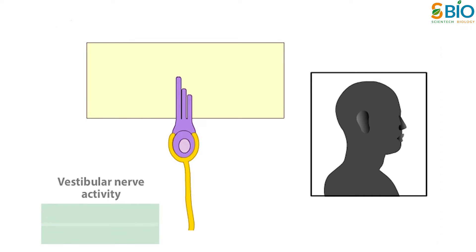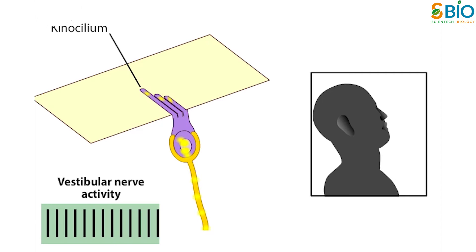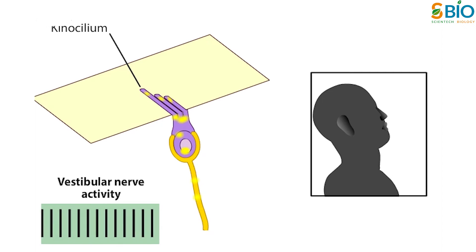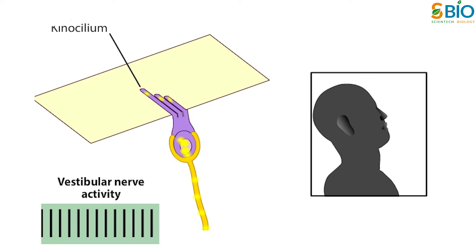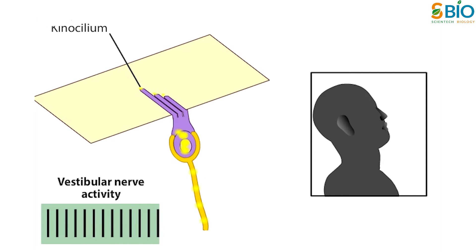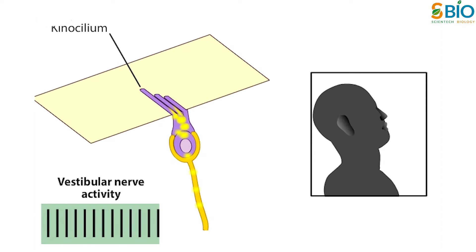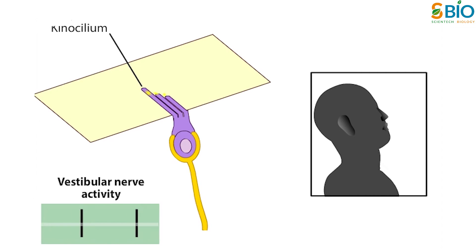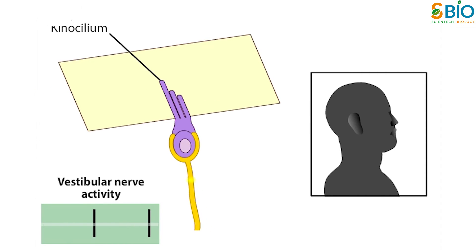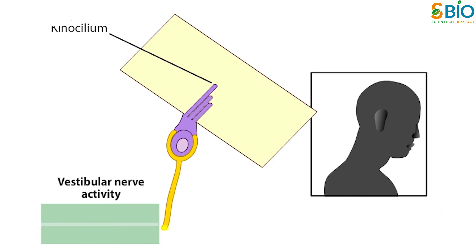Movement of the stereocilia towards the kinocilium causes potassium channels to open, depolarizing the hair cells. The depolarization results in neurotransmitter release and excitation of the vestibular nerve fibers. Movement of the stereocilia in the direction away from the kinocilium closes the channel, hyperpolarizing the hair cells and thus reducing vestibular nerve activity.